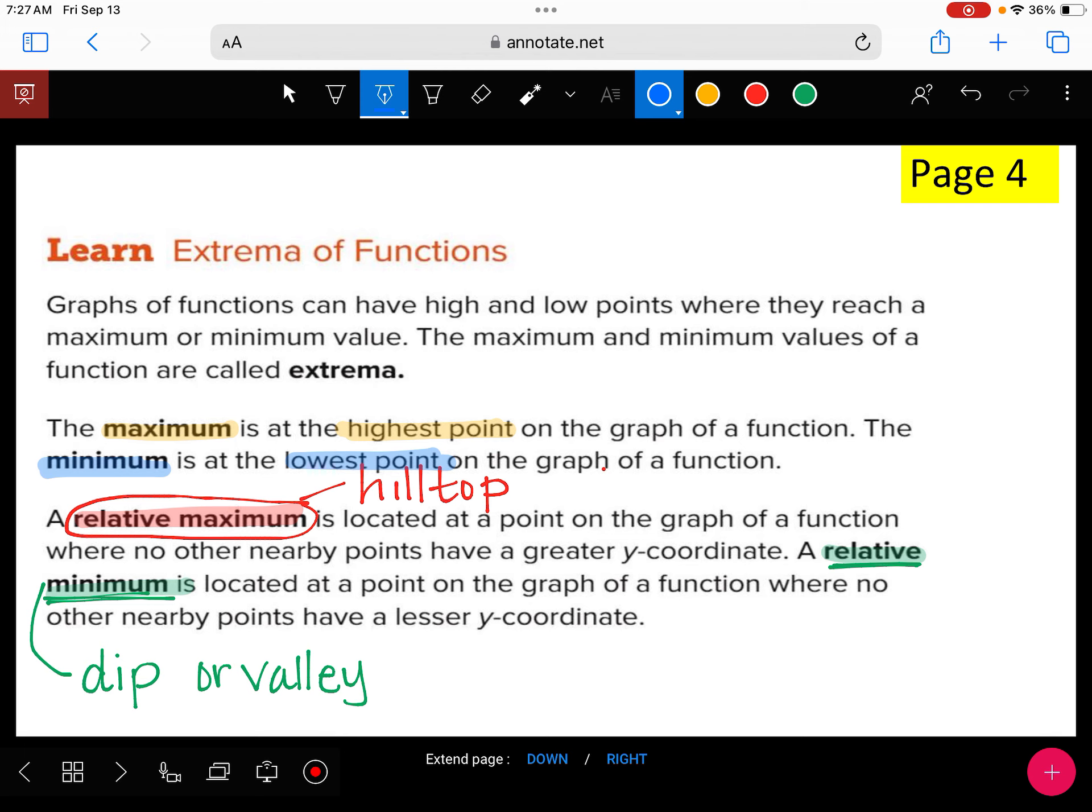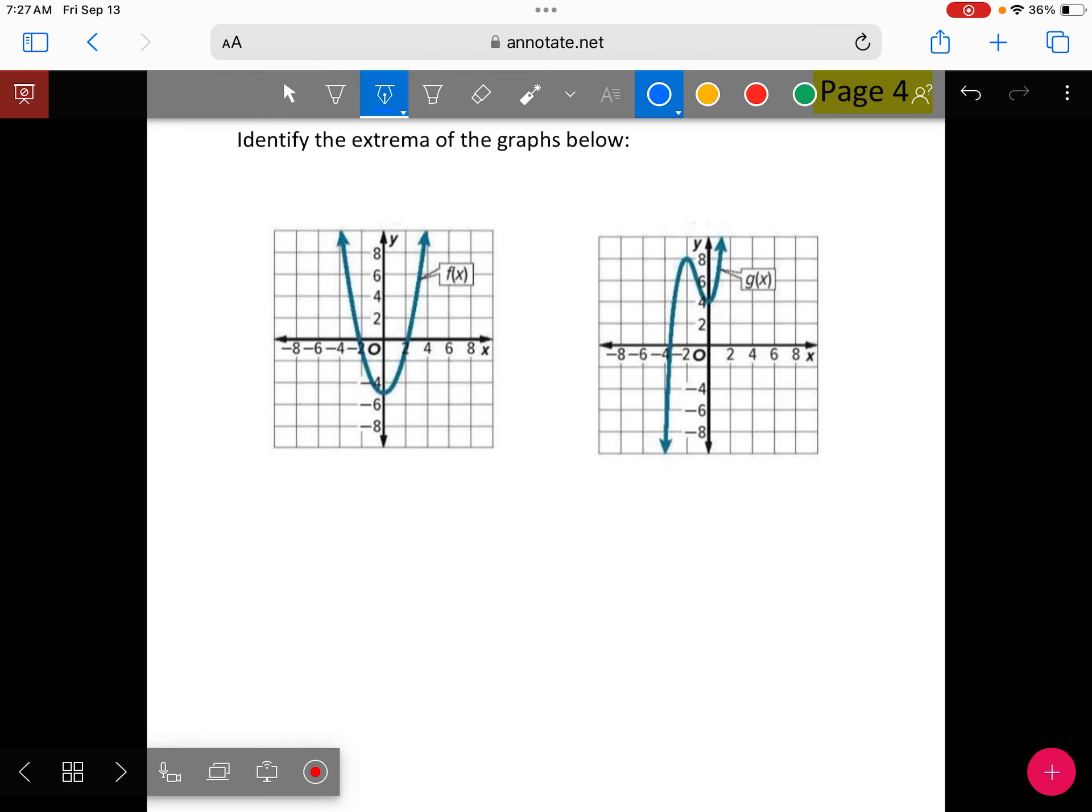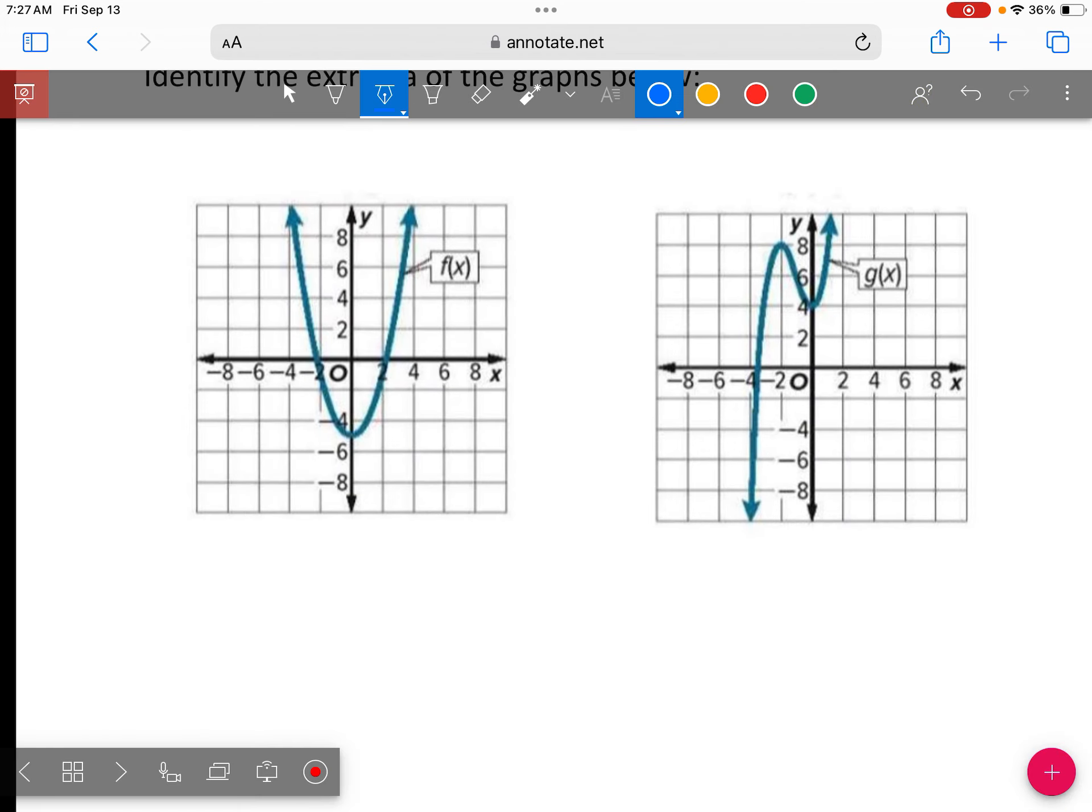Okay, so now let's take a minute and look at these graphs at the bottom of page four and let's go ahead and write these out. So at the bottom, we're going to fill in our max. I think there's a little bit of space. It doesn't take a lot of space. So write max, min, and then relative max and relative min. And we're going to do that under both graphs.